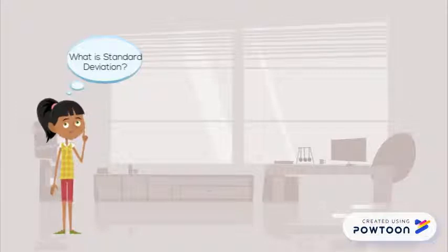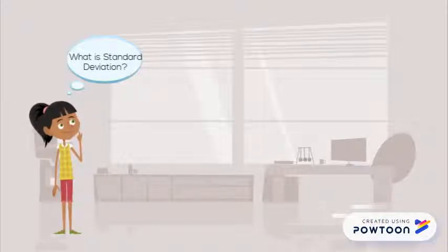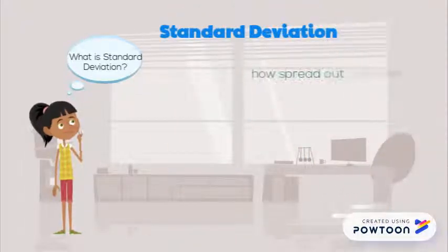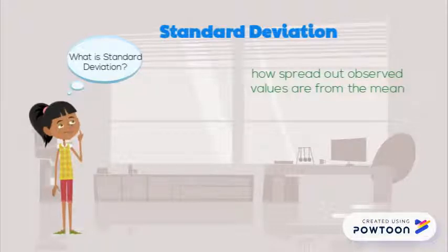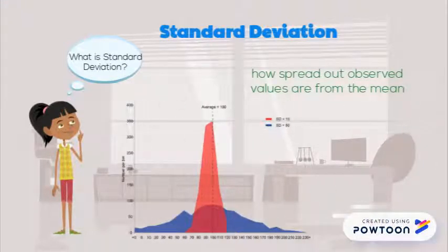In the previous video, we talked about the measures of central tendency, but now we're going to talk about symbols used to describe the spread of data. Standard deviation is how spread out observed values are from the mean. We are trying to find out if the data is concentrated around the mean or spread out.